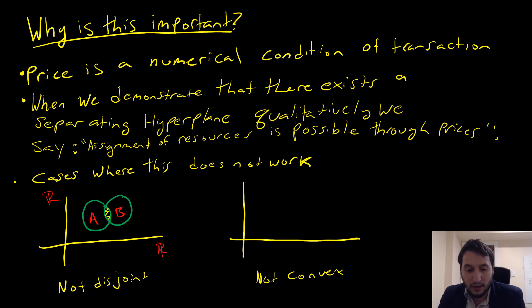Now let's consider the case where we don't have convexity, but we have disjointness. So we have something like this here and this here. Let's call this set A and call this set B.